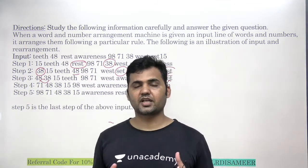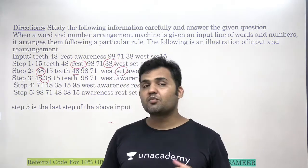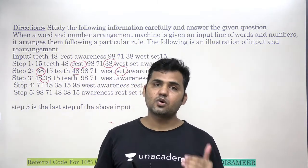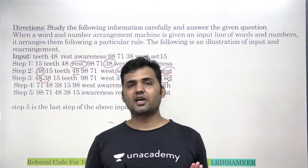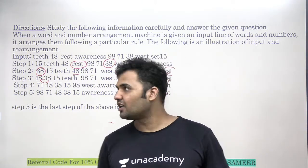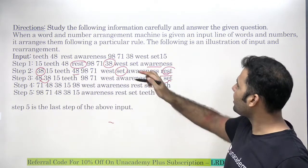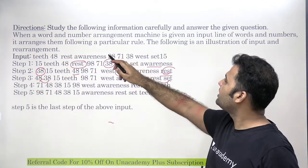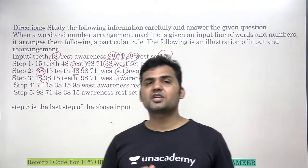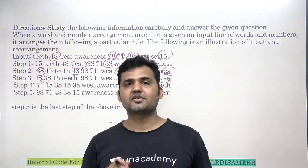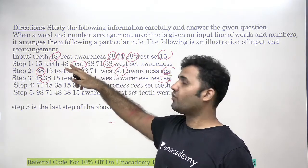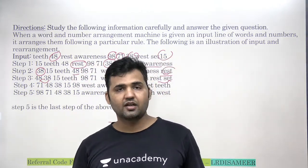Outside filling questions are simpler than inside filling because in outside filling there is no automatic filling of any element. All you have to do is give a new rank to every element. The total number of numbers here is five, and since there is no automatic filling, the number of elements — either words or numbers — will be the same as the number of steps required to complete the arrangement.